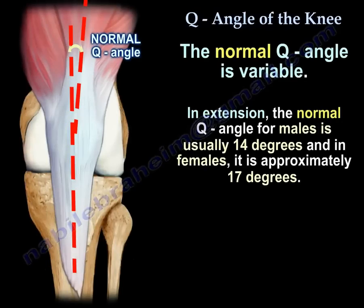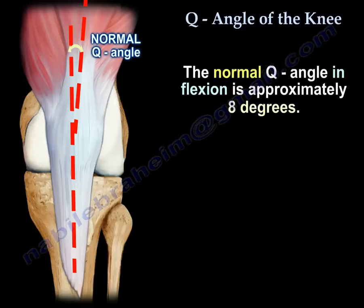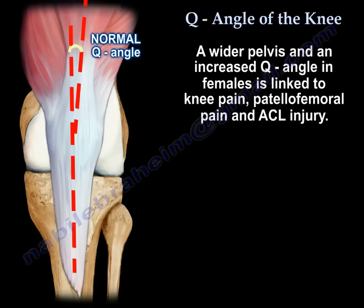The normal Q-Angle is variable. In extension, the normal Q-Angle for males is usually 14 degrees, and in females it is approximately 17 degrees. In flexion, the Q-Angle is approximately 8 degrees. A wider pelvis and an increased Q-Angle in females is linked to knee pain, patellofemoral pain, and ACL injury.